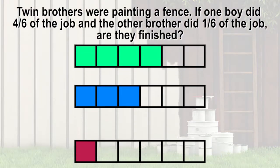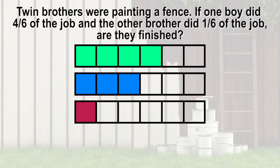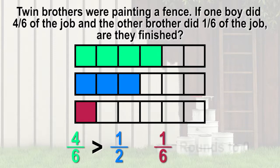As before, let's estimate to determine if our answer will be less than or greater than 1. We know that 3 sixths is 1 half, so 4 sixths is a little more than half of the job. 1 sixth is a small amount and would round to zero, so we can estimate that they've done less than the whole job.